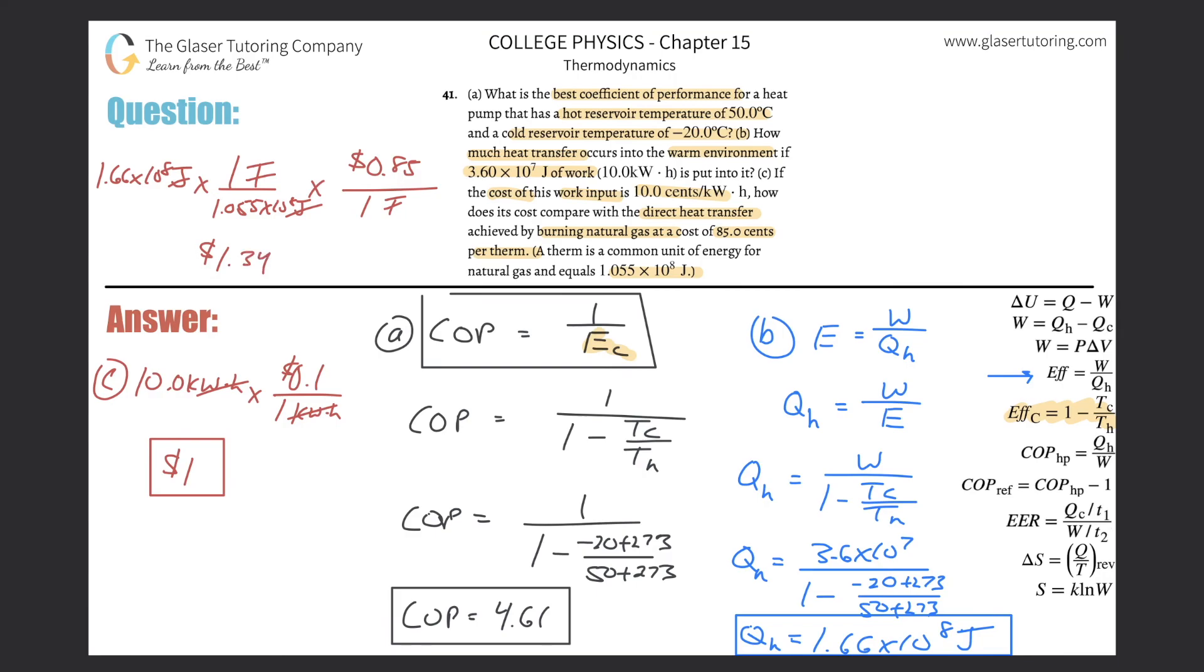So compare them. Well, per this, per the amount of heat that has to be transferred, the burning natural gas costs 34 cents more. In other words, it costs burning natural gas will basically cost 1.34 times the amount as using the heat pump. All right, guys. So hopefully this helps. Please remember to help us out and subscribe. We look forward to seeing you in the next question. Take care.